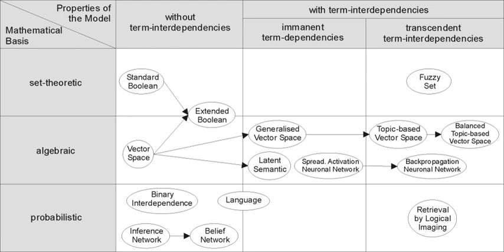The evaluation of an information retrieval system is the process of assessing how well a system meets the information needs of its users. Measurement considers a collection of documents to be searched and a search query. Traditional evaluation metrics, designed for boolean retrieval or top-k retrieval, include precision and recall. All measures assume a ground-truth notion of relevancy: every document is known to be either relevant or non-relevant to a particular query. In practice, queries may be ill-posed and there may be different shades of relevancy.